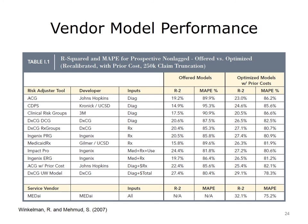Which product is best? A 2007 study by Winkleman and Mahmood for the Society of Actuaries compared various risk adjustment models using R-squared and mean absolute prediction error. The highest performing risk score — Verisk DXCG — using only diagnosis information and age and sex, had an R-squared value of 20.6, and 26.5 when previous cost information is included. The CDPS model was the lowest, with an R-squared of 14.9. The mean absolute prediction error is presented as a percent of the prediction itself, so the errors often are nearly as large as the prediction itself. Lower MAPEs are better and generally follow the R-squared.